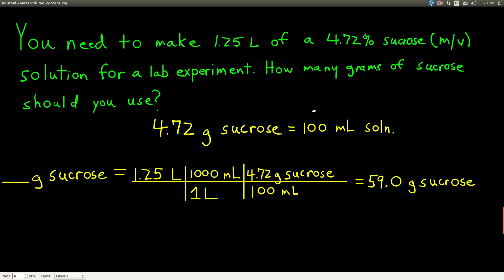So let's do an example. Let's say you're doing a chemistry experiment and you need to make up 1.25 liters of a 4.72 percent sucrose mass volume solution. You want to know how many grams of sucrose you need to use. So you know you're going to make a total of 1.25 liters and you're going to end up using DI water to dilute your final solution to 1.25 liters. But how much sucrose do you put in there?